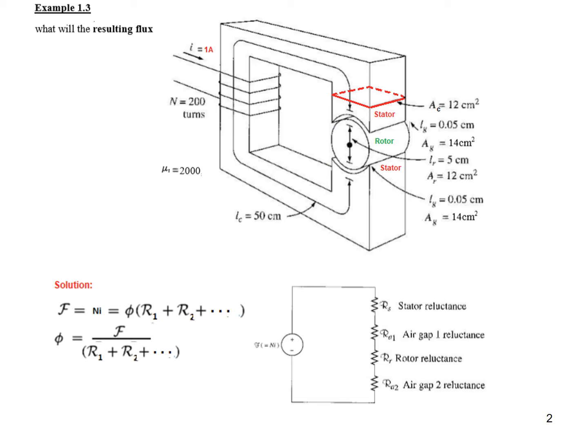Then we come to the rotor. The rotor length is 5 centimeters and the area of cross-section of the rotor is assumed to be the same as the stator, that is 12 centimeters. Then the second air gap has the same parameters: gap 0.05 and area of cross-section is 14 centimeters.